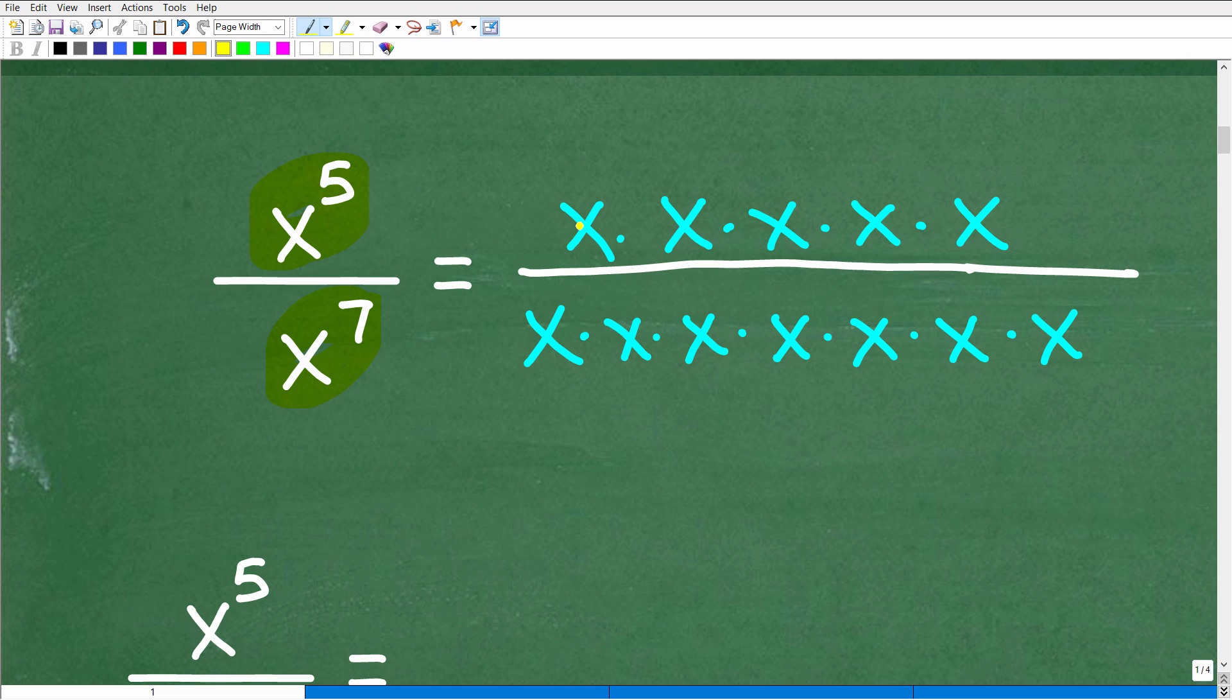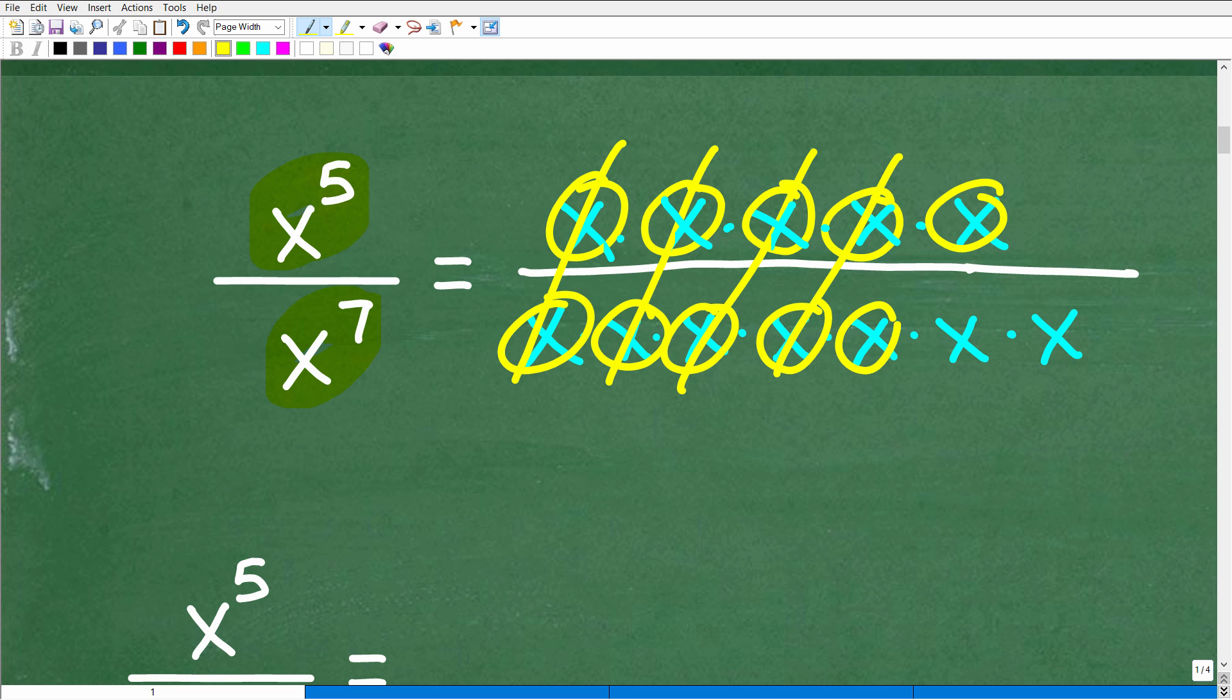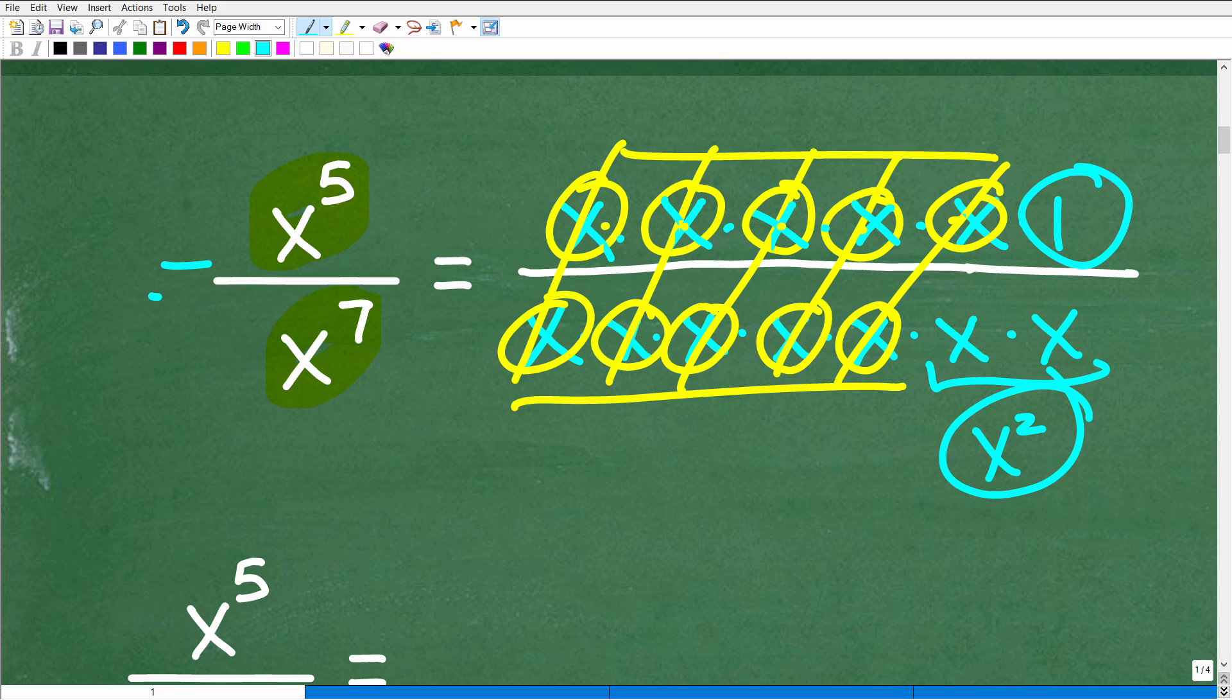So looking right here, we have a whole bunch of common factors. So this x can cross cancel this x. This x can cross cancel this x. It's one for one. This one can cross cancel this one, and this one can cross cancel that one. So we have one, two, three, four, five x's cross canceling with these five x's down here, and we're left with x times x, which is down here in the denominator, the same thing as x squared. Now up in the numerator, we don't have anything, but we always have one as a factor. So we have one in the numerator and x squared in the denominator. So our answer is one over x squared.